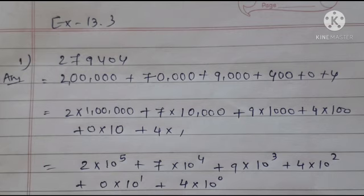Next step, we have to give the answer in exponential form. So 2 multiply 10 raised to 5 - 1 lakh, 1 ke baad jitne zero hai consider karenge. 7 multiply 10 raised to 4, plus 9 multiply 10 raised to 3, because 10 multiply 10 multiply 10 is 1000. Plus 4 multiply 10 raised to 2, plus 0 multiply 10 raised to 1, that is 10, when we multiply by 0 it will be 0, plus 4 multiply 10 raised to 0, which means 1.